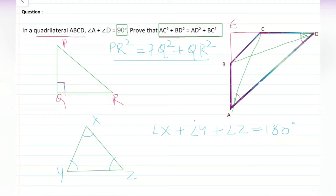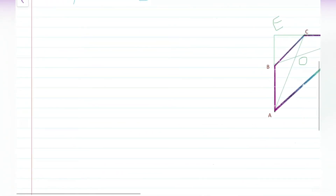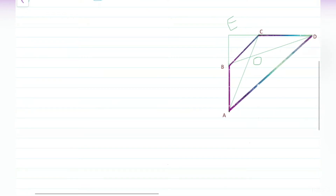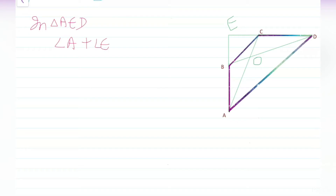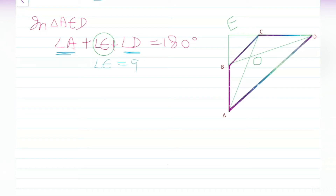Now, angle E will be 90 degrees. Here is how: in triangle AED, angle A plus angle E plus angle D equals 180 degrees. But the question states that angle A plus angle D equals 90 degrees. Therefore, angle E must equal 90 degrees. So we now have a right angle at E, and we can apply the Pythagorean theorem.